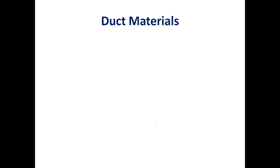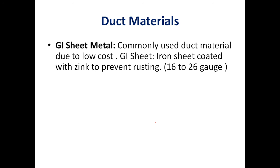Now let us look at duct materials. The most commonly used material is galvanized iron (GI) sheet metal, preferred for its low cost. Galvanized iron is iron sheet coated with zinc to protect it from rusting. Different gauges are used, ranging from gauge 16 to gauge 26. Higher pressure requires a lower gauge number, because a lower gauge number means greater sheet thickness.